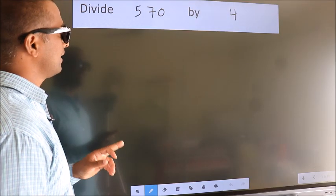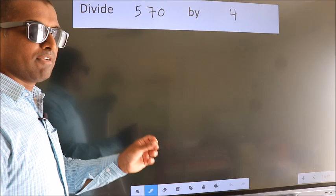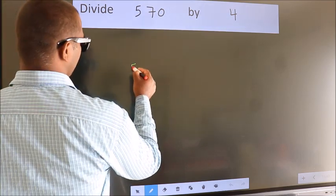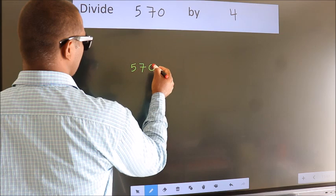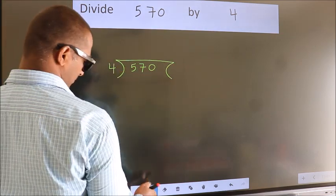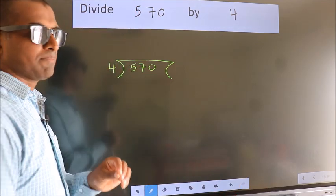Divide 570 by 4. To do this division, we should frame it in this way: 570 here, 4 here. This is your step 1.